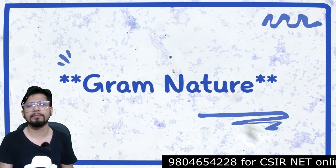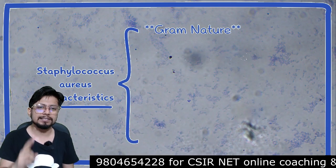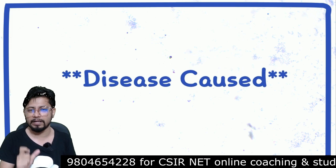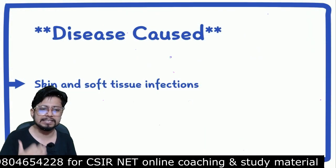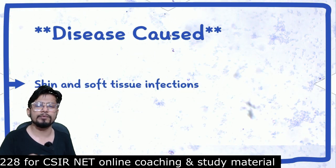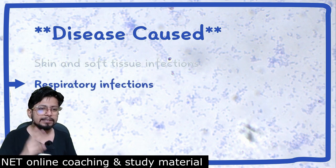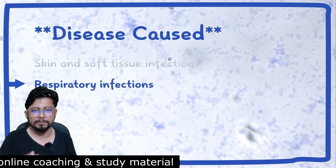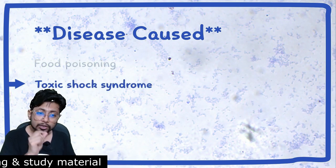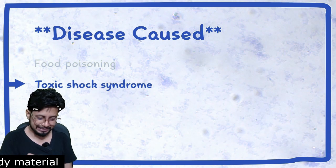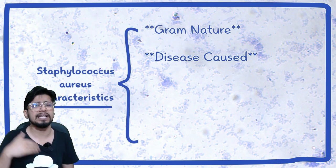The first thing we want to talk about is the gram nature of Staphylococcus aureus — it is gram positive in nature. The second important feature is the diseases it can cause. Primarily skin and soft tissue infections are very common. Then respiratory infections, food poisoning, and toxic shock syndrome (TSS), which is a very dangerous and deadly situation, can also be caused by Staphylococcus aureus.